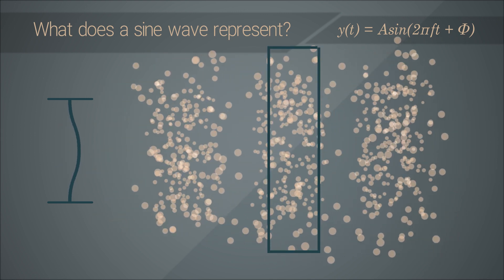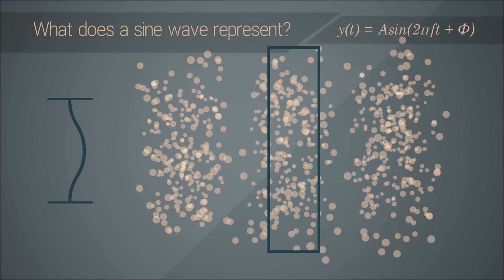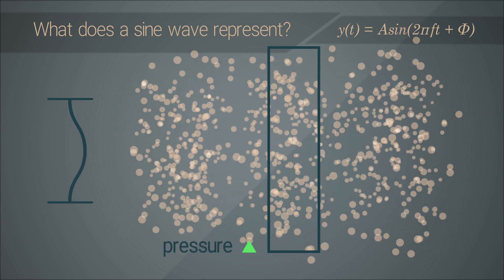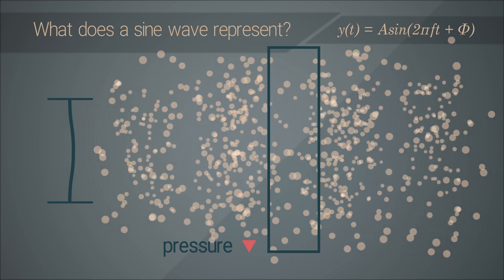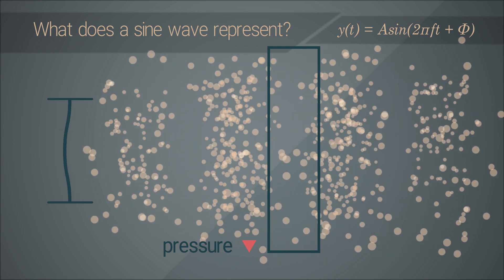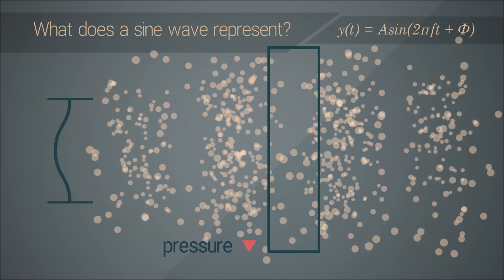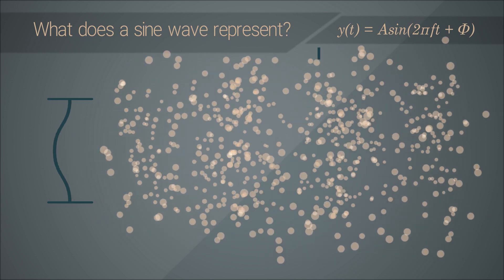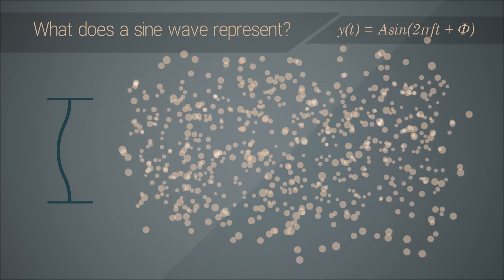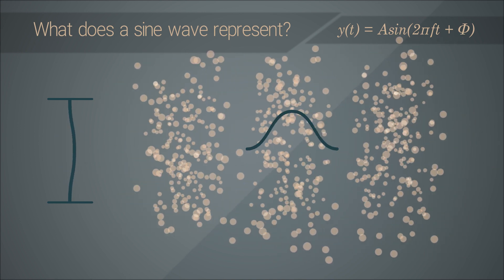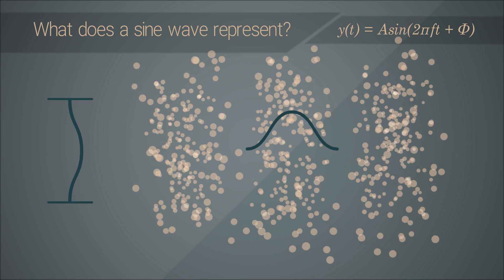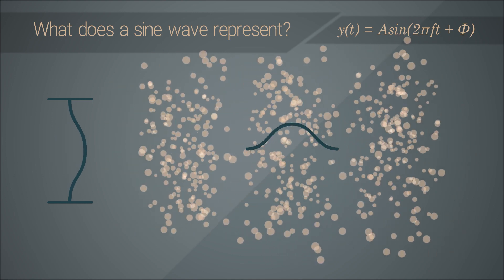This causes the molecules to first crowd together and then move apart. The alternate crowding together and moving apart of these molecules in turn affects the surrounding air pressure. The fluctuation of air pressure is propagated outwards, till this resonance is transferred to the air next to our ear canal and is interpreted as sound. So the wave equation in the physical domain represents the sinusoidal motion of the change in pressure over time. Or more simply, it describes a pressure wave.